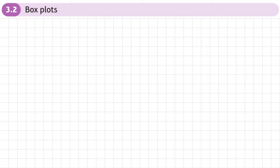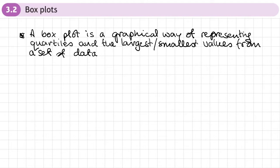This is the second section of Chapter 3 on representations of data, and this section is on box plots. Box plots you would have met at GCSE Maths, and a box plot is a graphical way of representing quartiles and the largest and smallest values from a set of data.